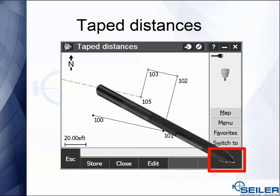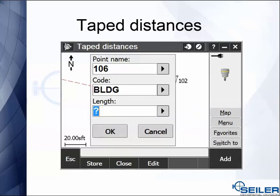You click add or hit the enter button on your keyboard and it asks you for a point name, code, and then the length of that segment of the feature.